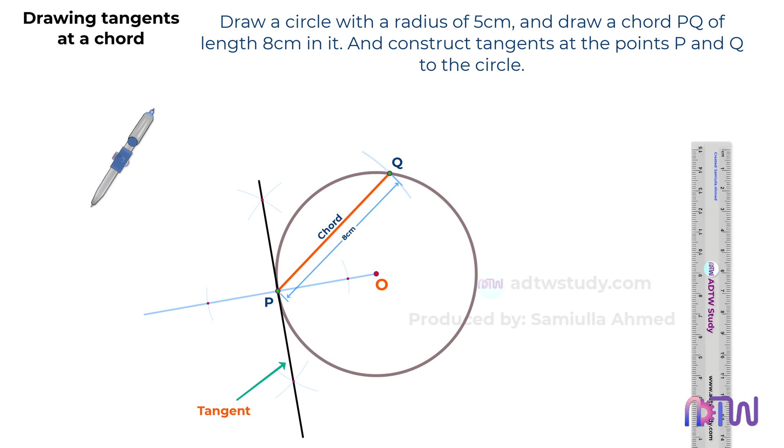Similarly, let's proceed to draw the tangent at point Q. Draw a line from the center of the circle to point Q as indicated.